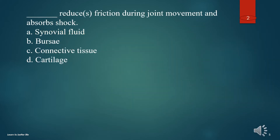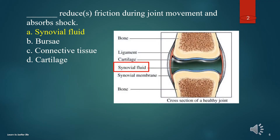What reduces friction during joint movement and absorbs shock? A. Synovial fluid. B. Periosteum. C. Connective tissue. D. Cartilage. The answer is A. Synovial fluid.